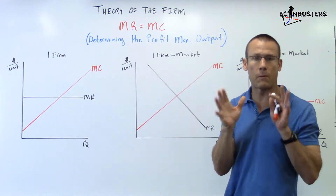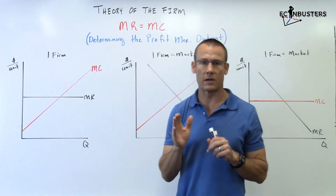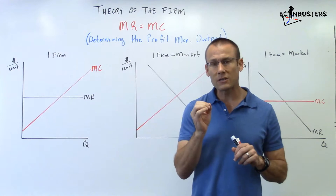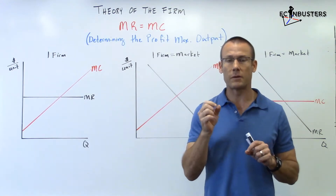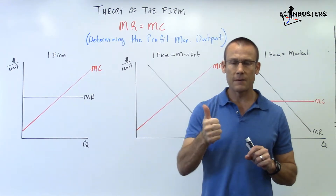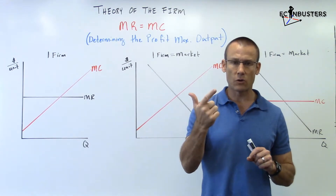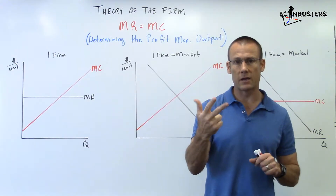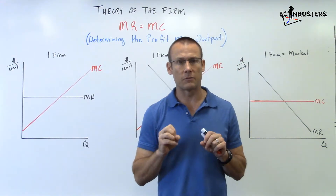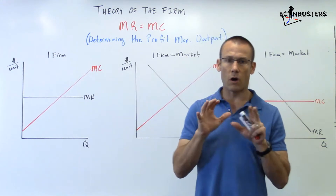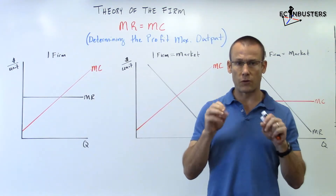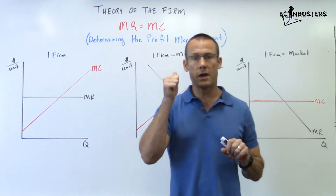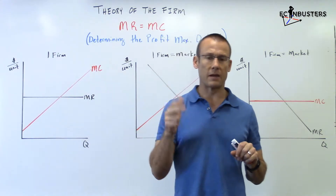I really want to focus on that word 'output' for a second. Once you determine the level of output, that's going to be the key to determining the price, average total cost, and average variable cost if you need to find it. That's why you hear me oftentimes say, draw the big three curves when you first get a Theory of the Firm question: MR, MC, and Demand.